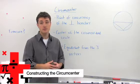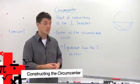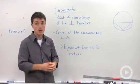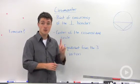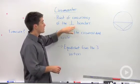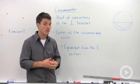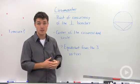One of the four main types of points of concurrency that we find in triangles is the circumcenter. Point of concurrency means you have at least three lines intersecting in one spot. So the circumcenter is where the three perpendicular bisectors of each side intersect.